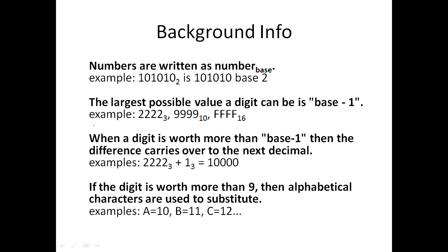Here's some background information. First of all, we are base 10. So if you see a plain number with no base, you can assume it's base 10. Otherwise a number is written as the number and then in subscripts the base. For instance, 101010 base 2. You write it this way, you say it this way.